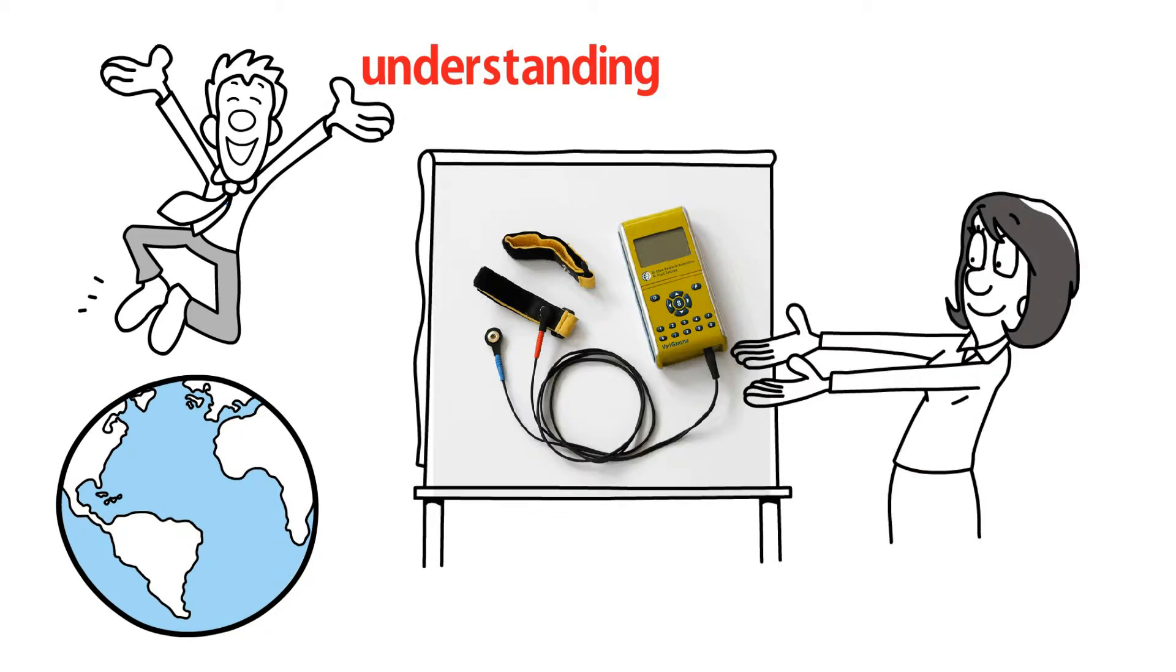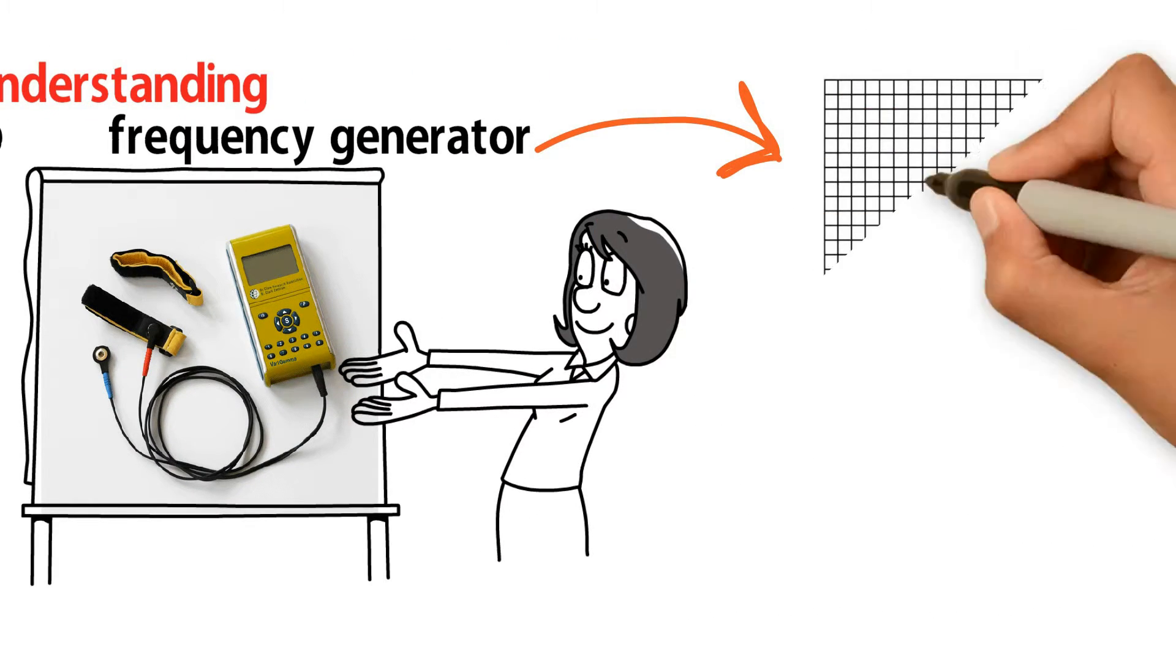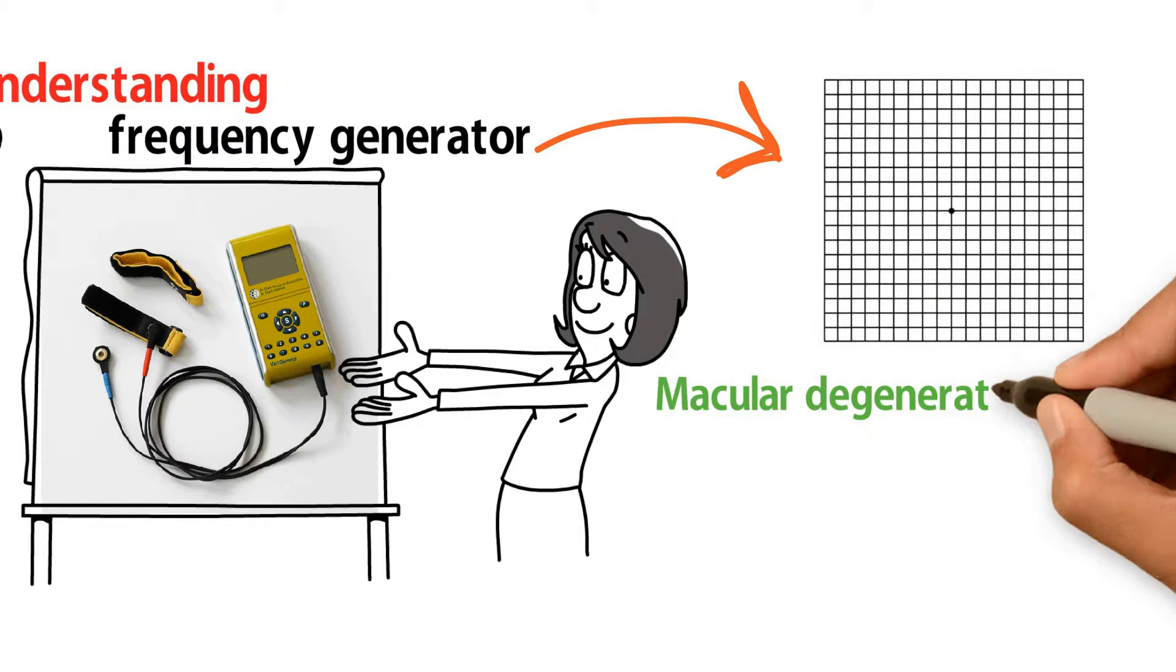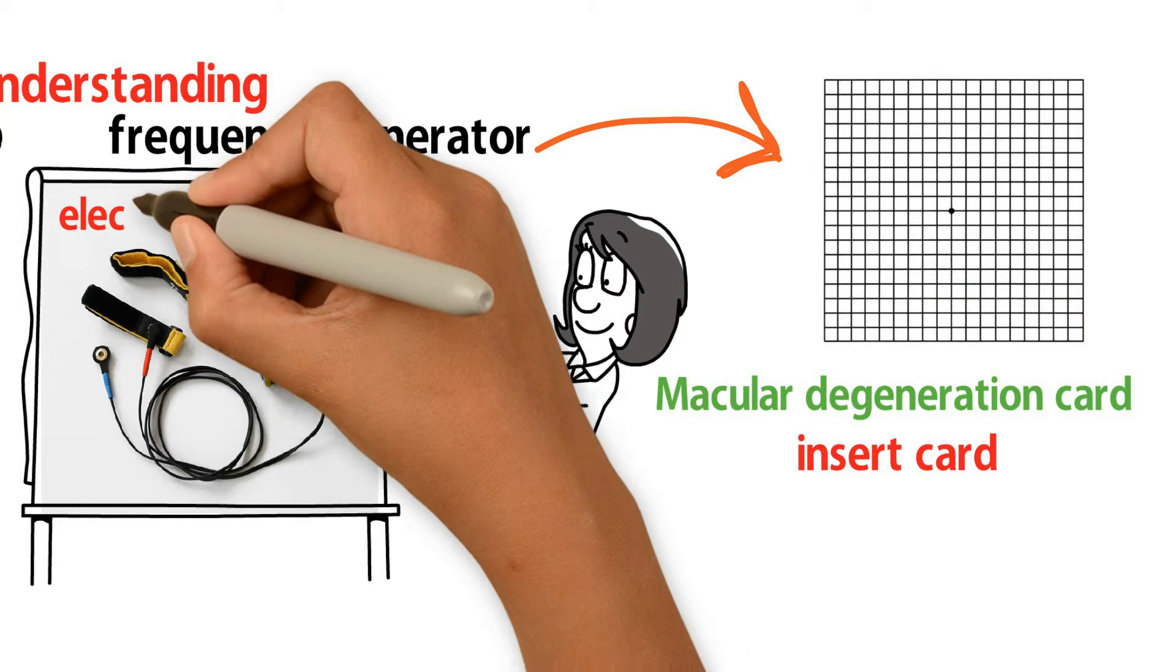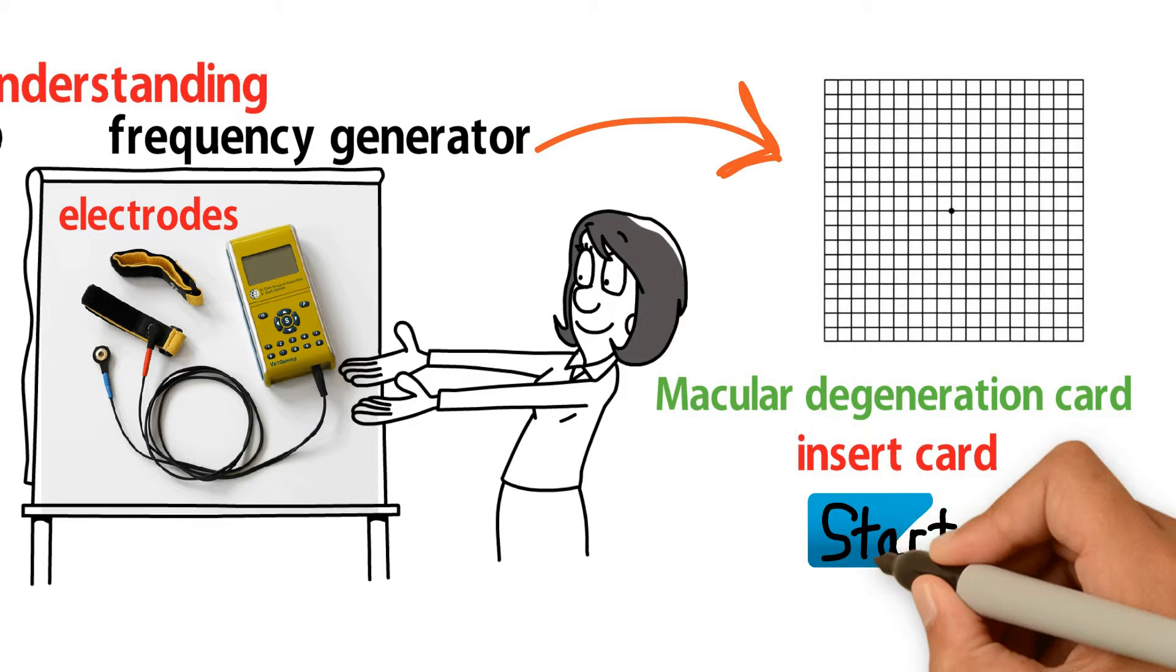The upgradable VariZapper is a simple frequency generator which accepts pre-programmed cards. Macular degeneration card, insert card, place electrodes on the temples, press the start button.